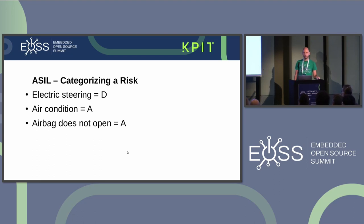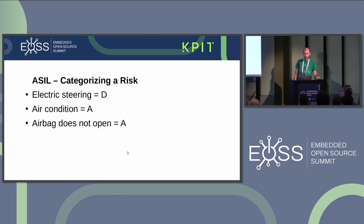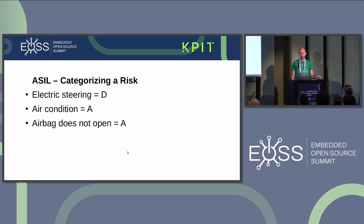Another example: the air conditioning. It does not sound dangerous, but let's analyze it. What could happen in the worst case? If it gets too hot in the car, you might lose consciousness and end up in a fatal crash, so the severity is also very high. The exposure is medium — in some countries you need it, in others you don't. But the controllability is very high: if it gets too hot you can open the window, stop driving, get out of the car, or call an ambulance. Therefore, the air conditioning has only ASIL level A.